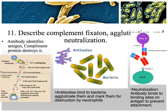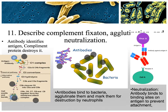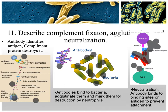In complement fixation, antibodies combine with complement proteins to create a structure that lyses the cell. In agglutination, antibodies connect with multiple bacteria at a time; more antibodies connect to those bacteria and others until everything is clumped together. In neutralization, an antigen wants to bind with a receptor site, so the antibody ties up that antigen so it cannot bind with your receptor.